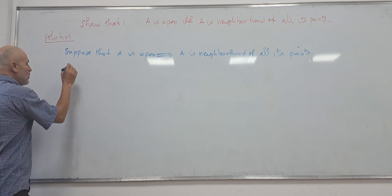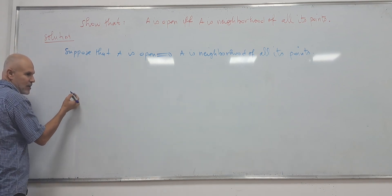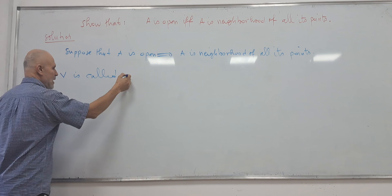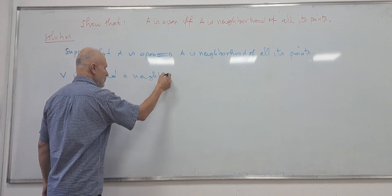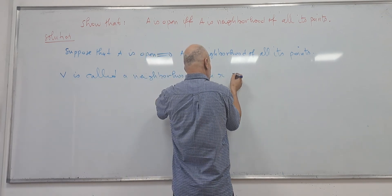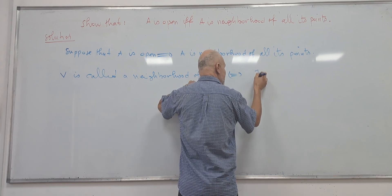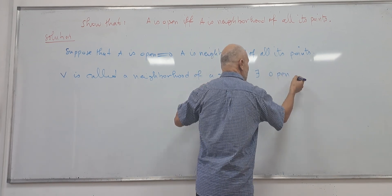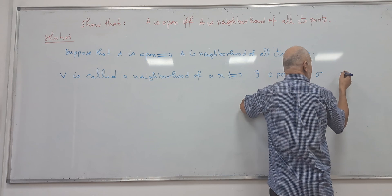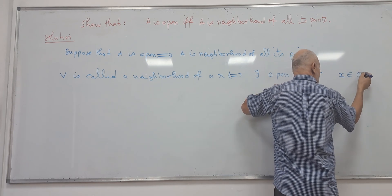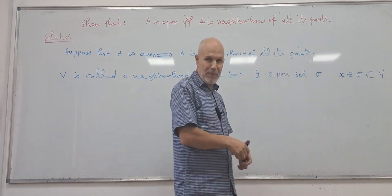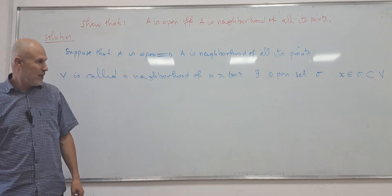By definition, I mean any set is said to be a neighbor, so V is called a neighborhood of a point X. This is equivalent by definition to the existence of an open set O, which is this open set contains X and the open is contained in V. This is what we mean by a neighbor.